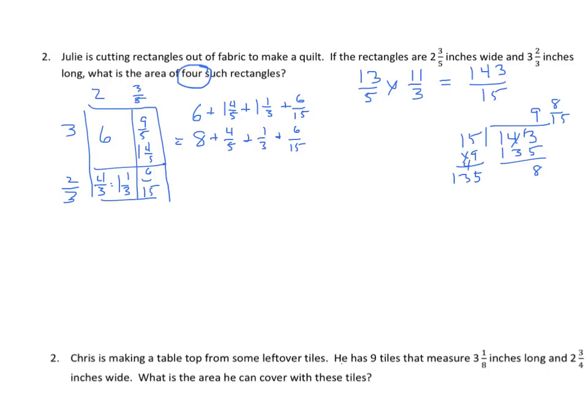So we get 6 plus 1 and 4 fifths, plus 1 and 1 third, plus 6 fifteenths. Let's take out our wholes, and we get 8 plus 4 fifths, plus 1 third, plus 6 fifteenths. I'm going to find a common denominator here, and that's 15. So 4 fifths becomes 12 fifteenths, and 1 third becomes 5 fifteenths, then we add our 6 fifteenths. We find the sum. We have 8 plus 23 fifteenths, and that becomes 9 and 8 fifteenths. So either way we do it, we get the same answer. But we're not done yet.